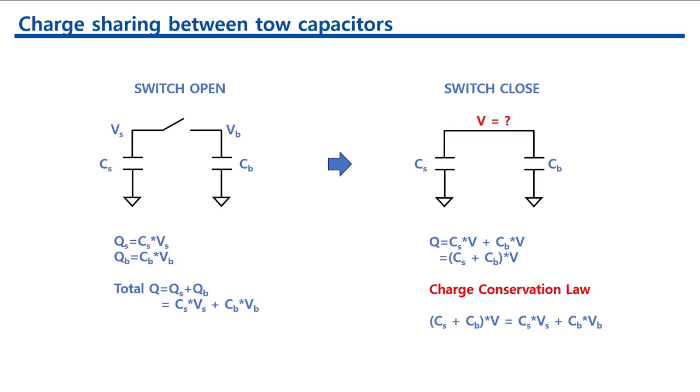We have two capacitors. One is Cs, and the other one is Cb. The initial voltage level of Cs is Vs, and Cb is Vb. We now close the switches, so that the charge is shared between the two capacitors.